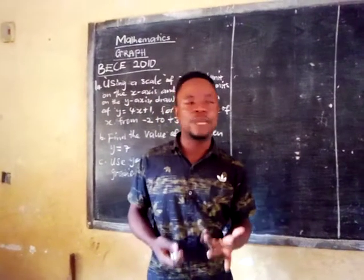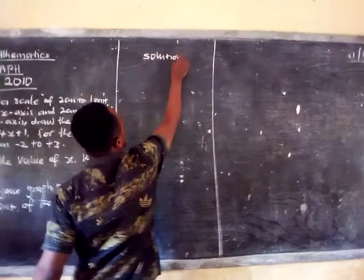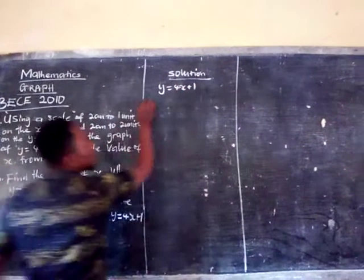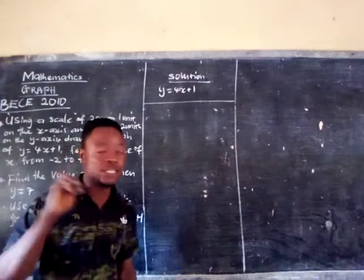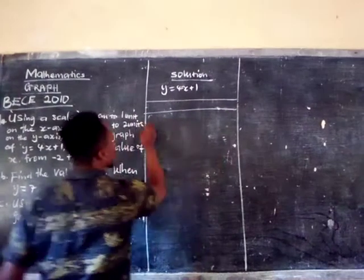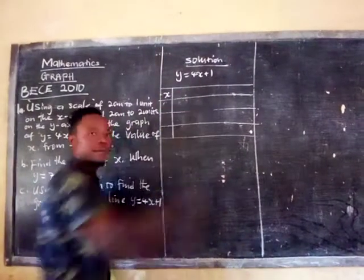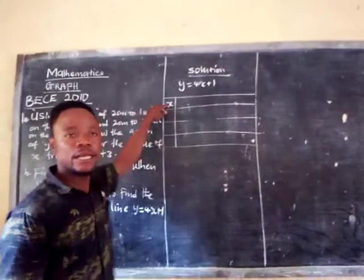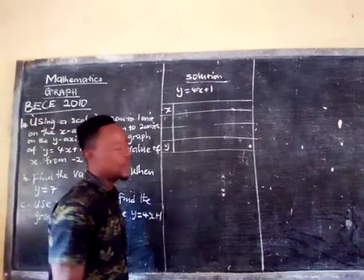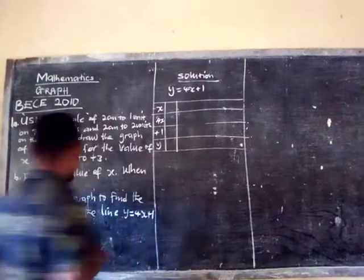In this video I will teach you how to solve this graph question using the alternative method. Using the alternative method, we have to draw four boxes. We draw four rows and columns. The first box is for the x values and the last one for the y values. We want to put this relation into two boxes — here will be for x and here will be plus 1.